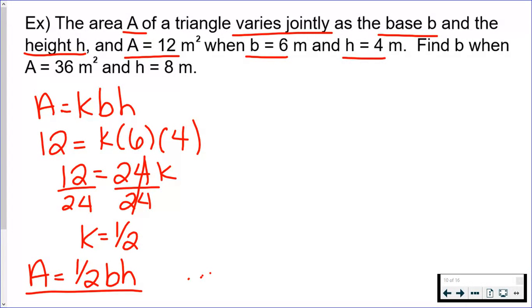The goal is to find b, and we're going to find b when A is 36 and h is 8. So the 12, the 6, and the 4 you're throwing out—you are not using them anymore. They have done their job. Do not mix and match numbers here. Now I'm going to plug in A is 36, h is 8.